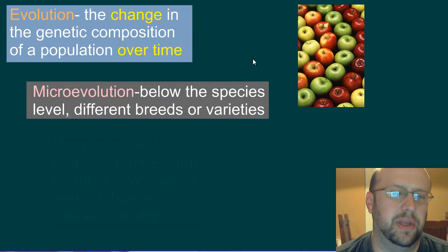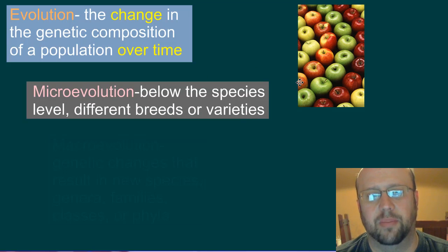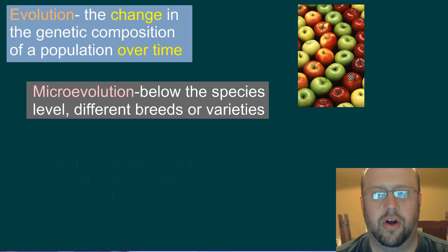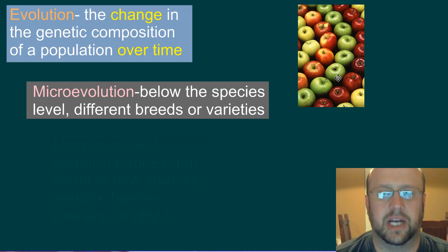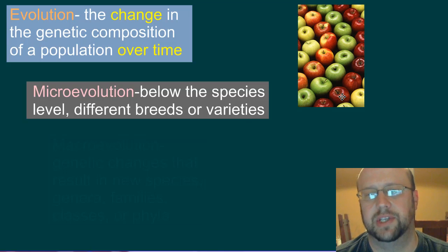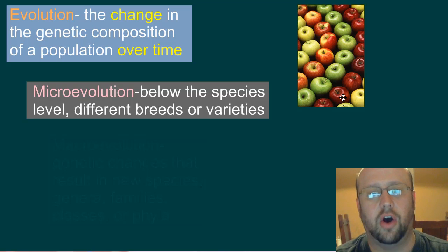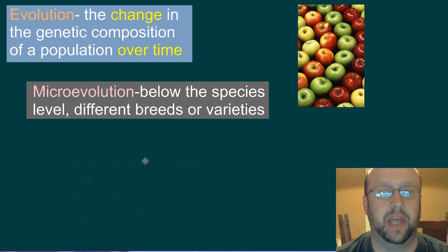We can divide this term up into two easy ways to understand it. One of them is what we call microevolution. Microevolution is basically just saying that we've got different breeds or varieties of things, and so that's why I've got all these apples here. There are hundreds and hundreds of different varieties of apples. They're all technically the same species for the most part, but they all have different characteristic genotypes that make them these different varieties of fruit. This is an example of people actually causing that change over time — that microevolution.